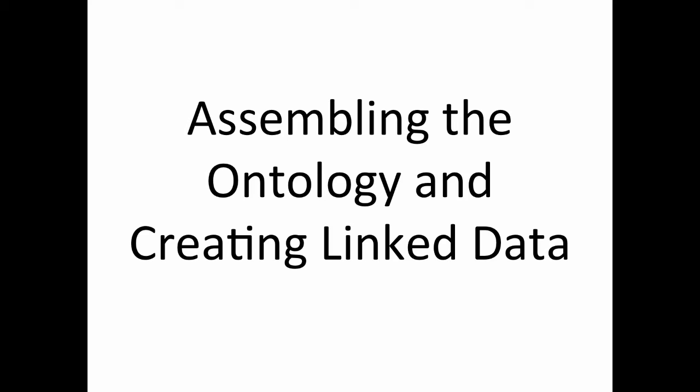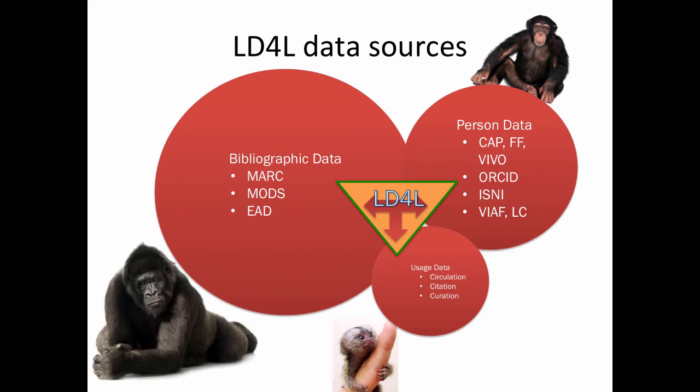Dean described some of the new data entry that the team undertook over the course of the two-year project, and he showed the three big pools we're dealing with: bibliographic data, person data, and curation or usage data. Theoretically they're all the same, but because we work in libraries, they're actually rather unbalanced.